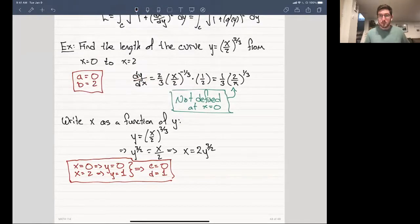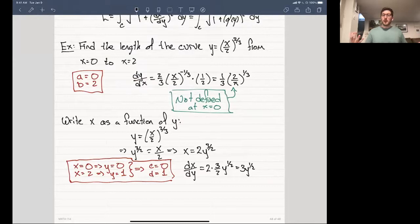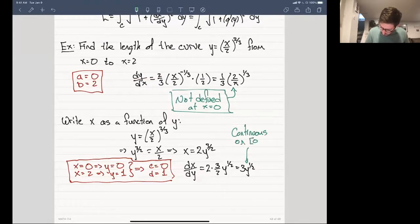But now we can ask ourselves, what is the derivative of x with respect to y now? So we can calculate dx/dy. And this is given by 2 times (3/2)y^(1/2), which is 3y^(1/2). And life isn't so bad anymore, right? Because this thing is actually continuous on the whole interval. So this is continuous on the interval 0 to 1.